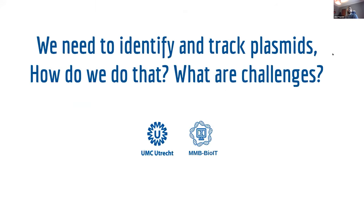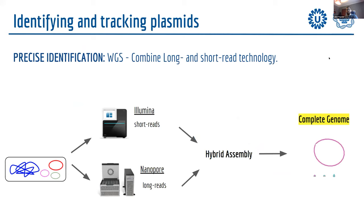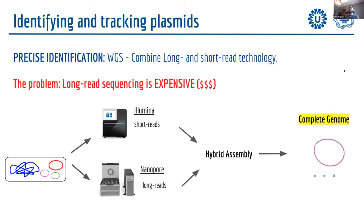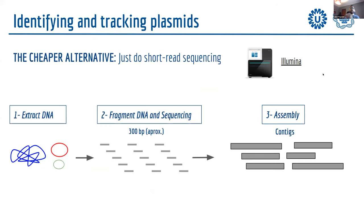We need to identify and track plasmids, but what are the challenges? If your lab has money, the challenge is smaller — you can sequence your bacterial genome using Illumina short reads and Nanopore long reads, then do a hybrid assembly. Most of the time you obtain a complete genome in which plasmid sequences are very precisely identified. The problem is that long-read sequencing is very expensive, especially in Europe, and even more inaccessible in other parts of the world.